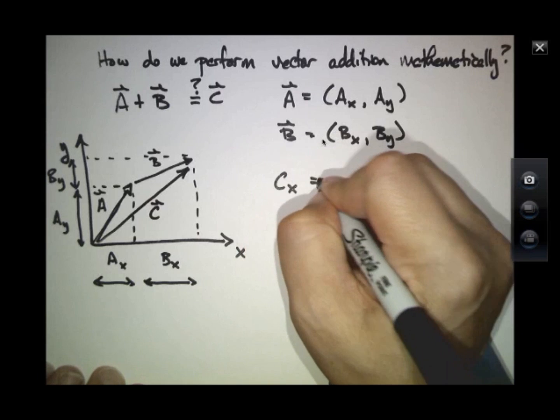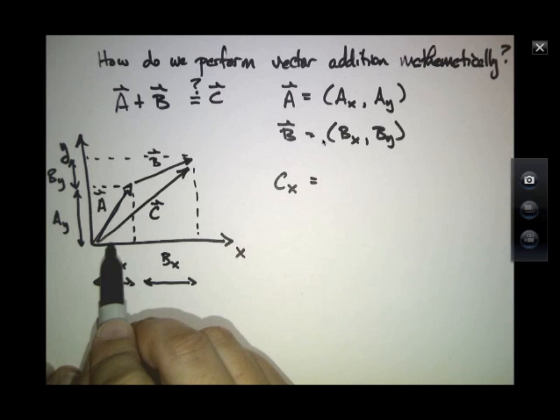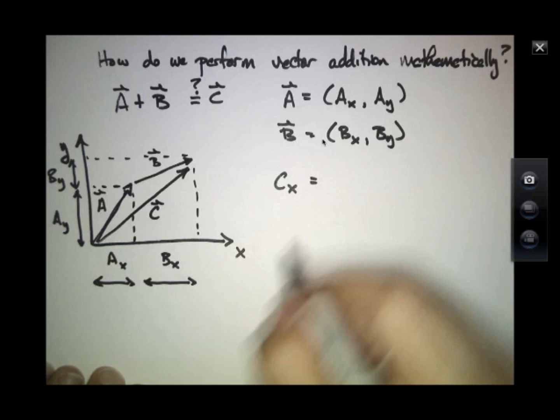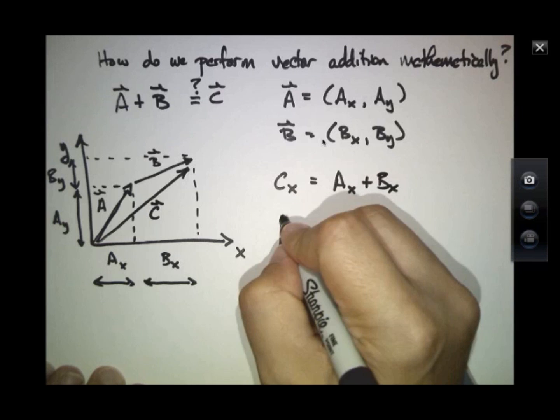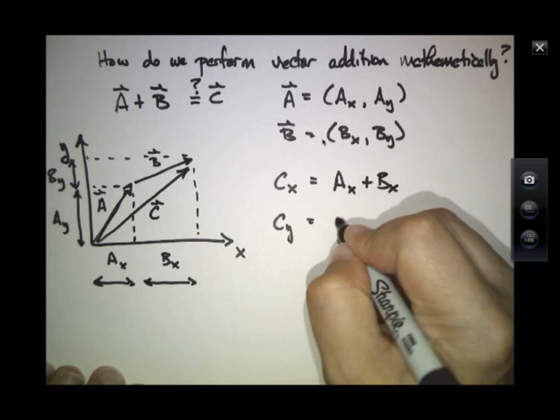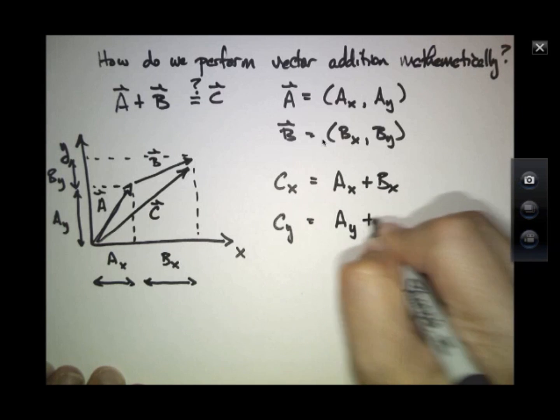Well, CX, if you can just look at what must be the projection of C down the X axis, it's none other than AX plus BX and CY is AY plus BY.